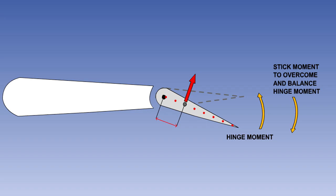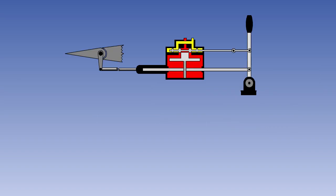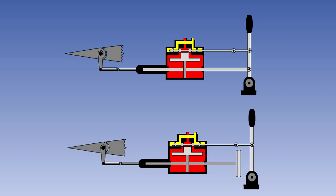You will see in another lesson that various aerodynamic devices can be used to assist the pilot. However, there comes a point where some form of power assistance is required. Power-assisted flying controls have hydraulic actuators assisting the pilot, while in fully powered systems, the entire load is taken by hydraulic actuators.